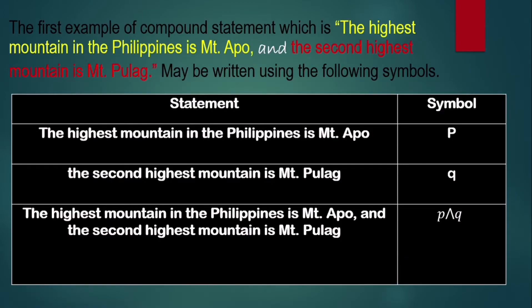Let's go back to the first example of compound statement: 'The highest mountain in the Philippines is Mount Apo and the second highest mountain is Mount Pulag.' This may be written using symbols. The first statement, P, is 'The highest mountain in the Philippines is Mount Apo.' The second statement, Q, is 'The second highest mountain is Mount Pulag.' So the compound statement is written as P ∧ Q, read as 'P and Q'.